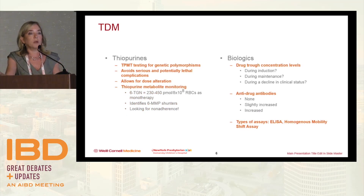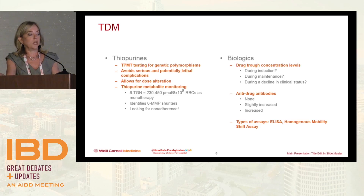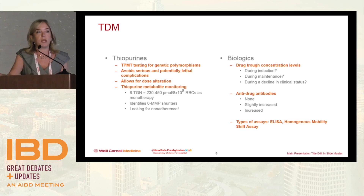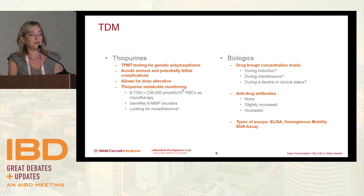There is therapeutic drug monitoring — we do TPMT testing to look for genetic polymorphisms, we want to avoid serious complications, and it allows for dose alteration. There was a certain level of 6-TGN we were targeting, and we also looked at 6-MMP, where very high levels could potentially cause liver toxicity. For patients whose adherence we questioned, we could check levels — if a teenager claims to be taking their 6-MP and there's no 6-TGN and no 6-MMP, that's another opportunity for TDM.